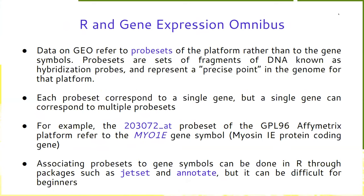Data on GEO come with samples in the columns and the probe sets of the platform in the rows, where probe sets are sets of DNA fragments known as hybridization probes. They represent a precise point in the genome for that platform — that specific point contains the data. Each probe set can correspond to a single gene, but a single gene can correspond to multiple probe sets, so it's not a one-to-one relationship.